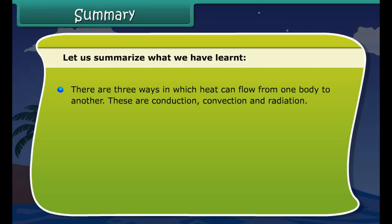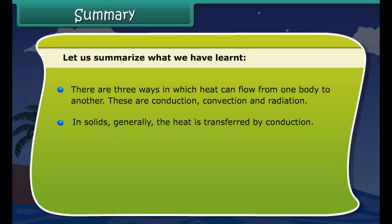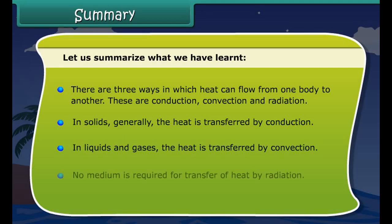Summary. There are three ways in which heat can flow from one body to another: conduction, convection, and radiation. In solids, heat is generally transferred by conduction. In liquids and gases, heat is transferred by convection. No medium is required for transfer of heat by radiation.